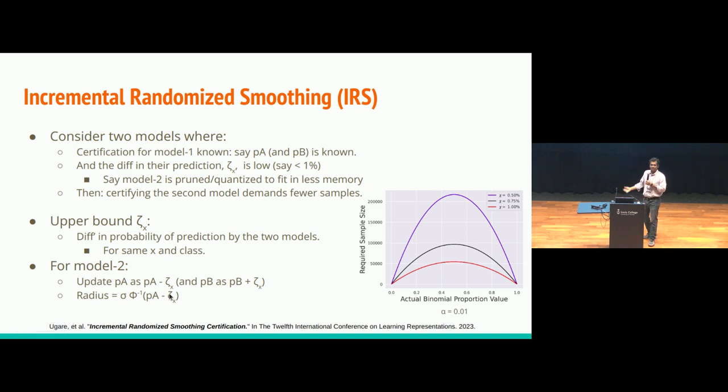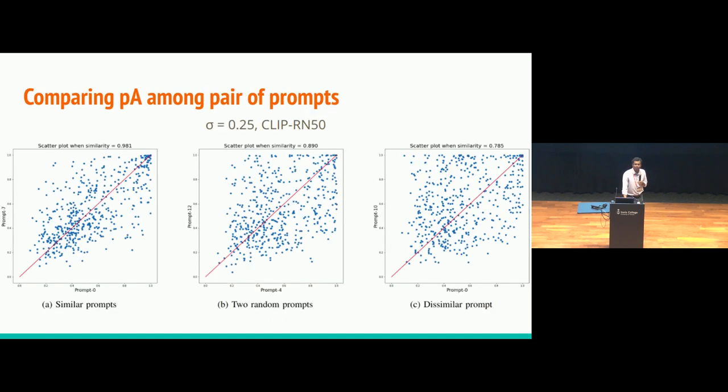We thought, great, let's try to use it for CLIP. But unfortunately, we found that even when two prompts are very similar, where we are measuring similarity in cosine similarity, we also tried Euclidean distance of the normalized embeddings. We saw that the PA is all over the place. Unfortunately, we cannot directly use it.